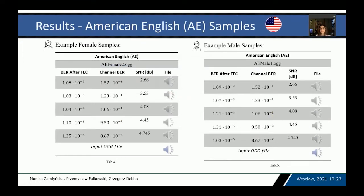We can hear it — let's check some samples. In the paper you can check results for more languages. Due to time limitations, I prepared only American English samples with female and male voice. For some cases, you can see a small difference in BER for the same SNR levels, because the BER was calculated for deterministic data; these differences are very small and visible only at very low bit error rates. First, let's listen to the original female sample. With SNR close to 5 decibels, the BER is close to 10⁻⁶ — very good communication conditions.